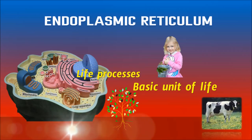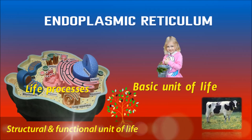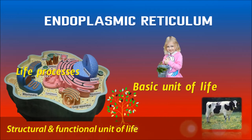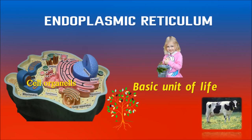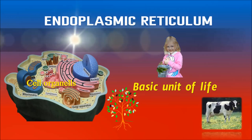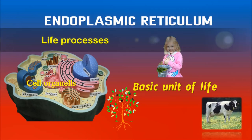Hence, the cell is also known as structural and functional unit of life. The cell contains different cell organelles such as mitochondria, endoplasmic reticulum, Golgi complex, chloroplasts, ribosomes, etc., to facilitate all the life processes.